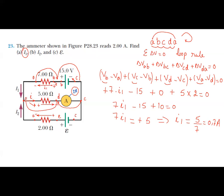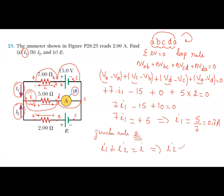To find i2, we apply the junction rule at node a. We have i1 and i2 coming in, and i going out: i1 + i2 = i. Therefore i2 = i − i1 = 2 − 0.7 = 1.3 amperes. So i2 = 1.3 A and i1 = 0.7 A.